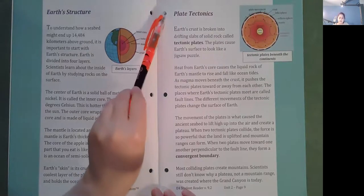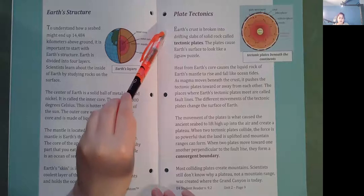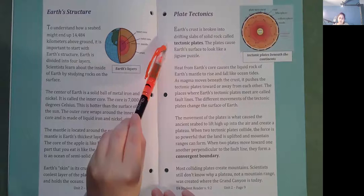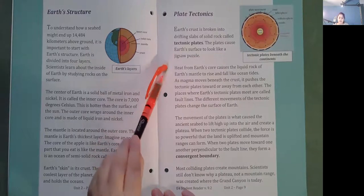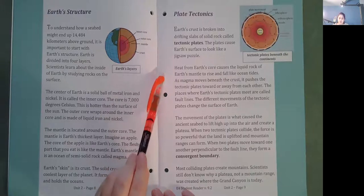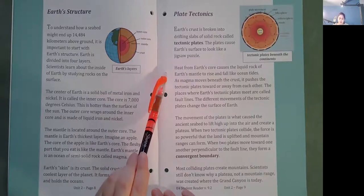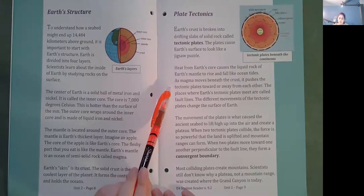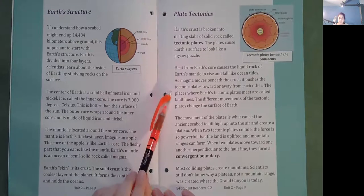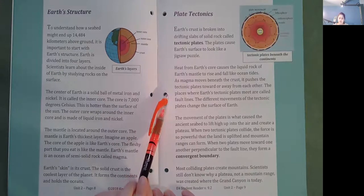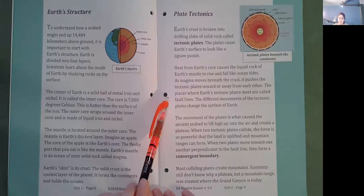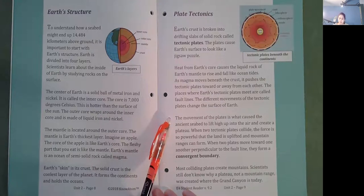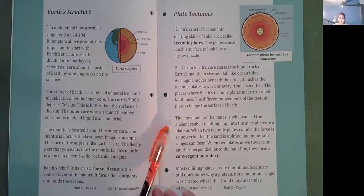Plate tectonics. Earth's crust is broken into drifting slabs of solid rock called tectonic plates. The plates cause Earth's surface to look like a jigsaw puzzle. Heat from Earth's core causes the liquid rock of Earth's mantle to rise and fall like ocean tides. As magma moves beneath the crust, it pushes the tectonic plates toward or away from each other. The places where Earth's tectonic plates meet are called fault lines. The different movements of the tectonic plates change the surface of Earth. The movement of the plates is what caused the ancient seabed to lift high up into the air and created a plateau.